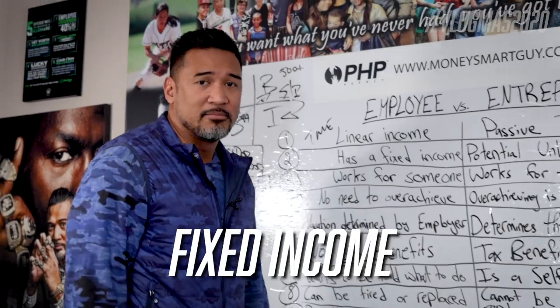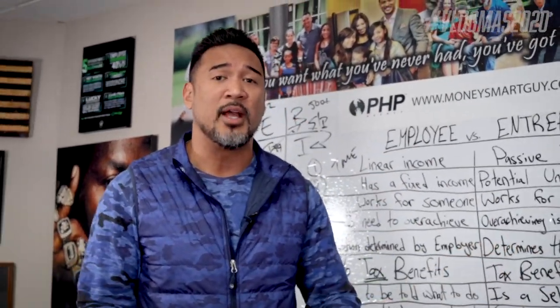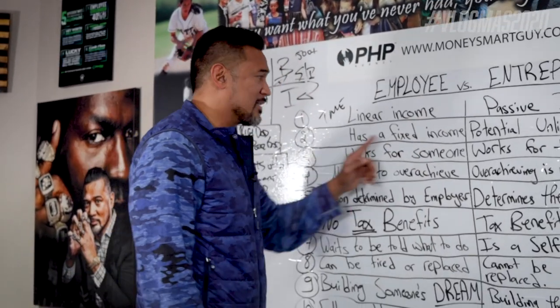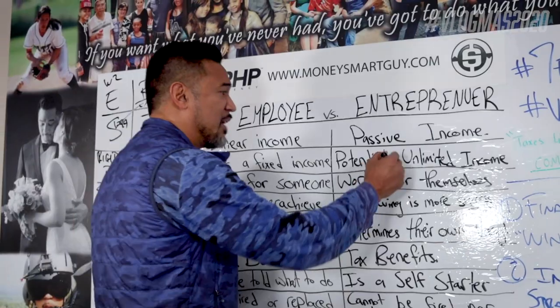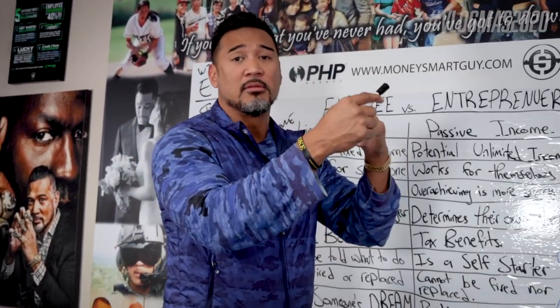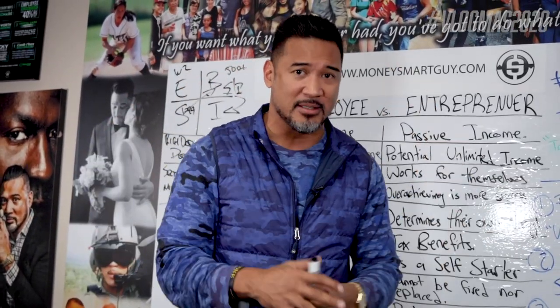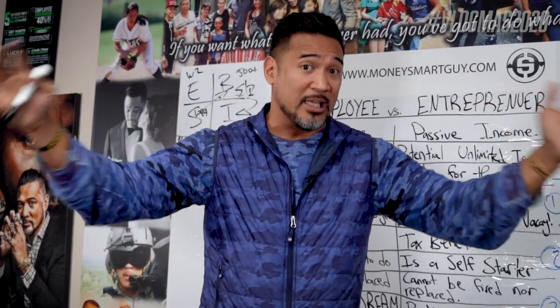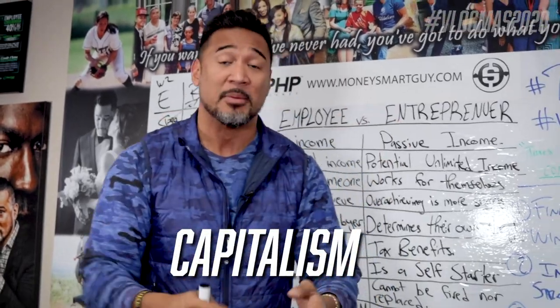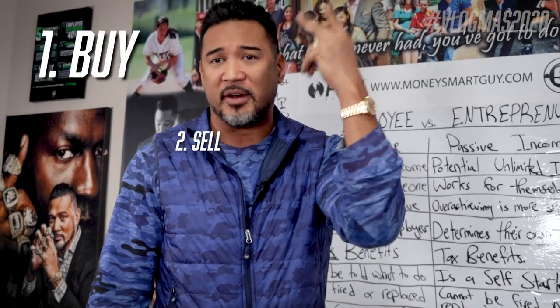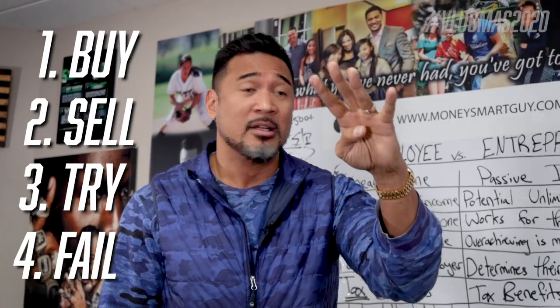Number two: employees have a fixed income. No matter how hard you work — whether salary or hourly wage — it's fixed. The $15 minimum wage is a fixed income. No matter how hard you work that hour or that year, you get a salary. With an entrepreneur, you have the potential for unlimited, exponential income. No cap on how much money you can make. That's called free enterprise, capitalism, entrepreneurship — free to buy, free to sell, free to try, and free to fail.